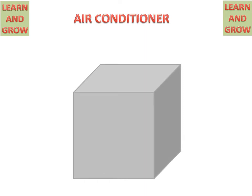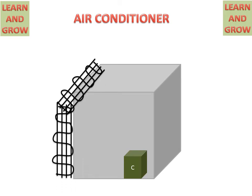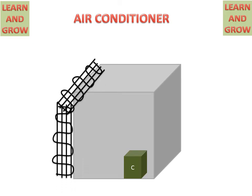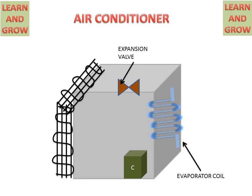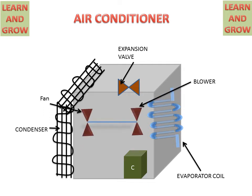We have an air conditioner box which contains a compressor, a condenser on the back side, an expansion valve and evaporator coils on the front side. All these are connected with the help of pipes.